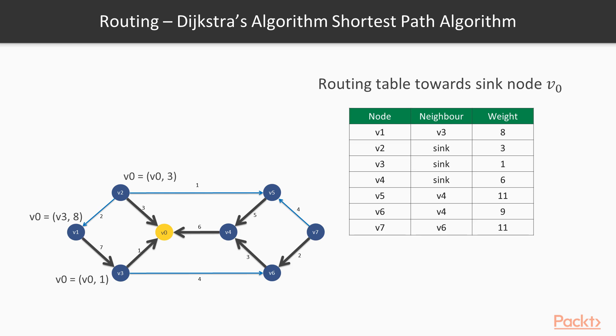This table is constructed for only the sink node v0. In the same way, every node will have entries in the routing table for every other sink node. As an example, look at the v2 node table. It stores the information of all the possible sink nodes and also tells us which neighbor node we want to forward this packet to and what would be the total weight of the path from this node to the destination node.